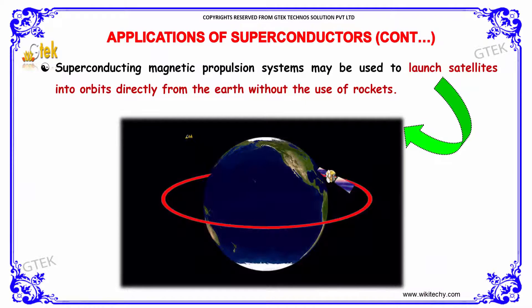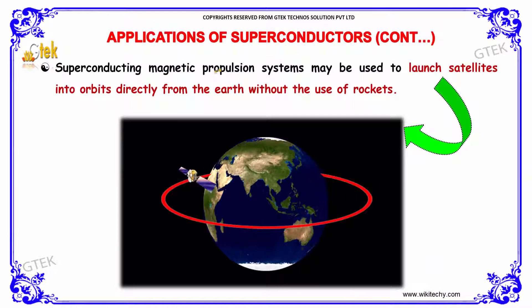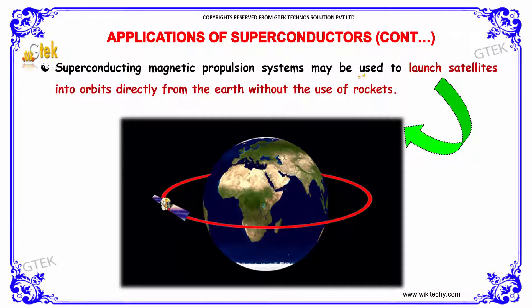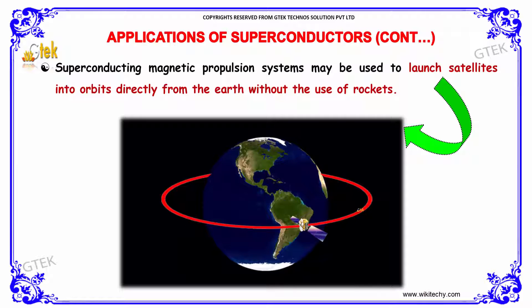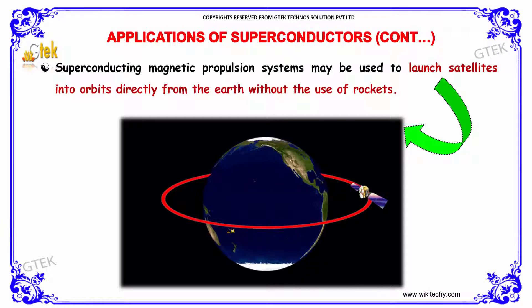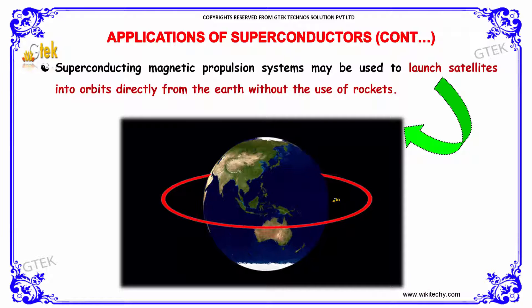Further, a superconducting magnetic propulsion system may be used to launch satellites into orbit directly from the Earth without the use of rockets.